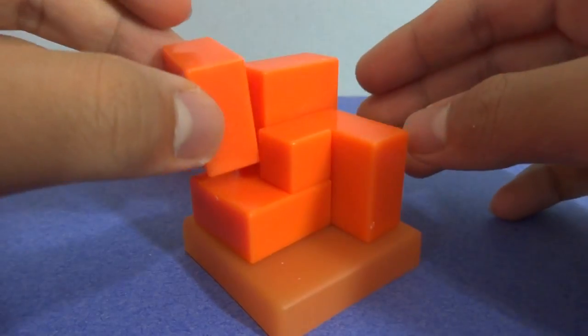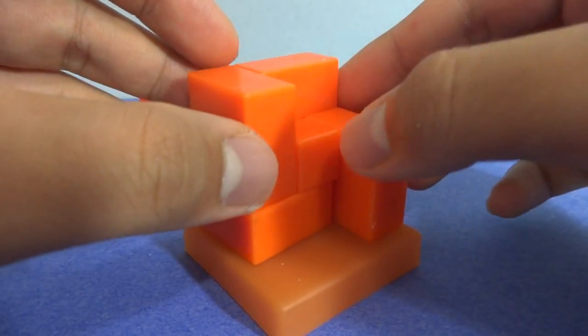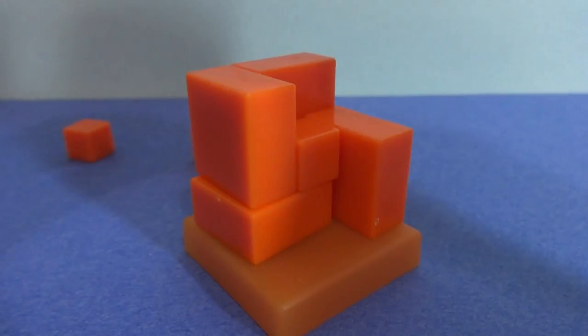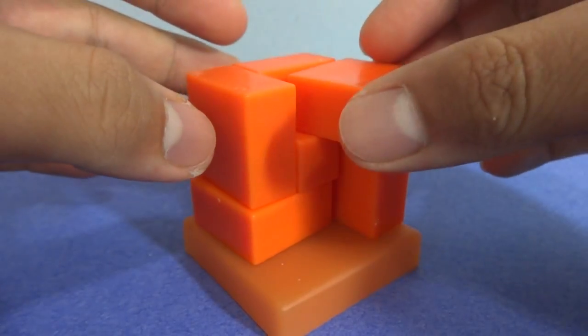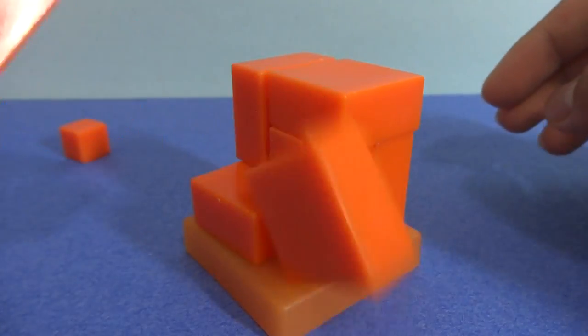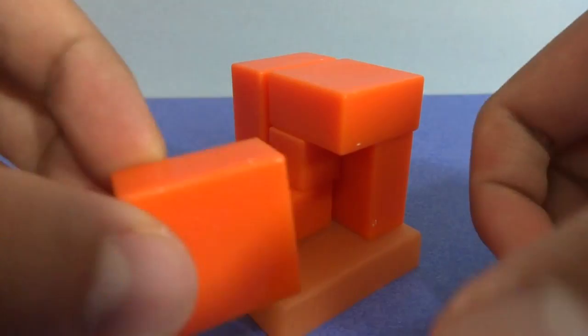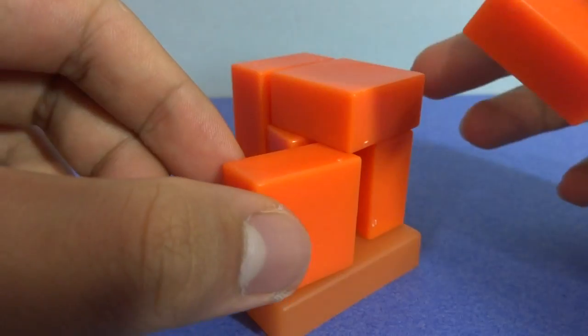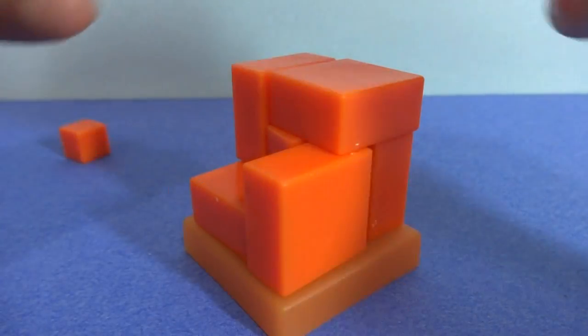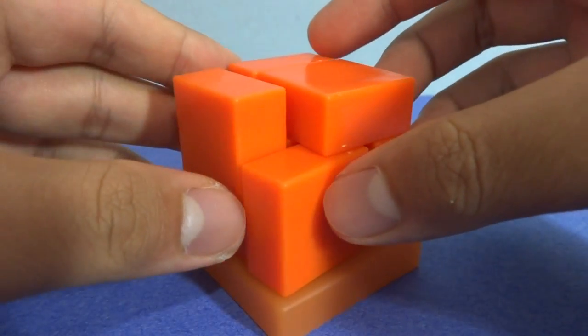And start overlapping these squares like so. That's one. That's two. And that's a mistake. And that's those three.